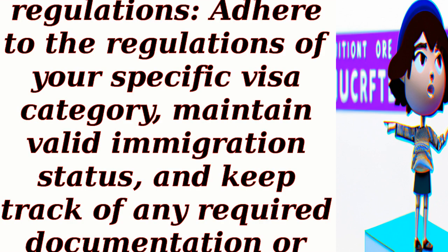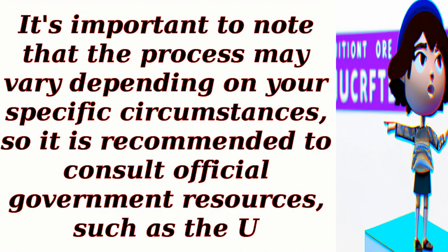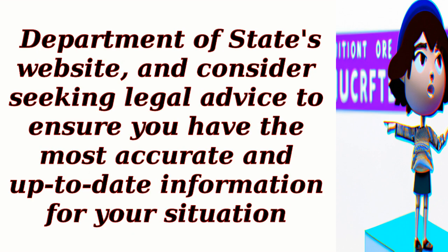Step 10: Comply with immigration regulations. Adhere to the regulations of your specific visa category, maintain valid immigration status, and keep track of any required documentation or reporting obligations. It's important to note that the process may vary depending on your specific circumstances, so it is recommended to consult official government resources, such as the U.S. Department of State's website, and consider seeking legal advice to ensure you have the most accurate and up-to-date information.